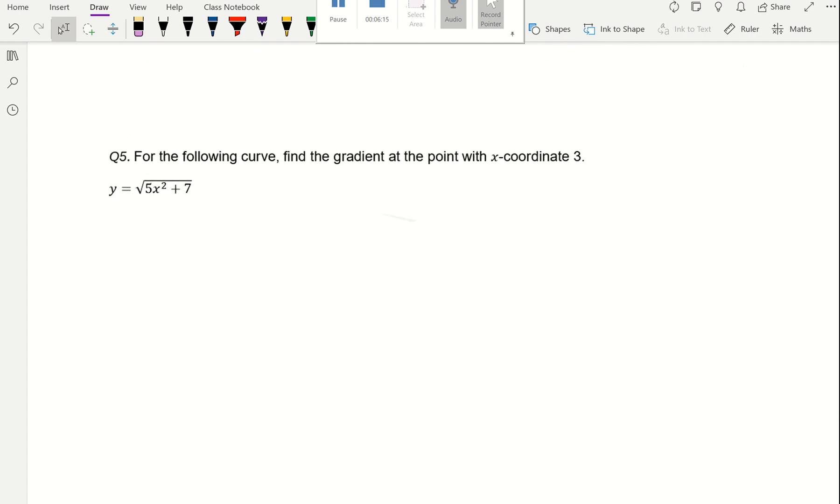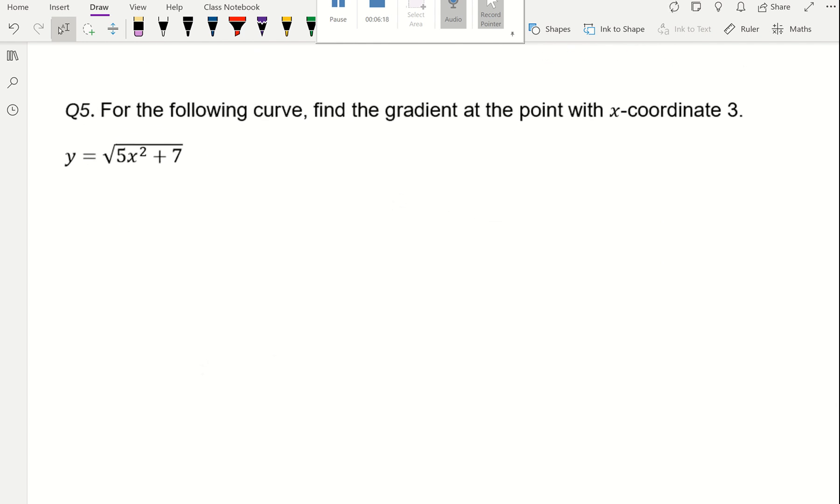The last question says for the following curve, find the gradient at the point with the x-coordinate 3, so x equals 3. Because of this square root, you need to rewrite y. y equals 5x squared plus 7 to the power of a half.